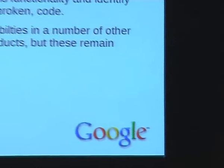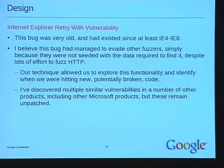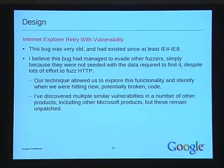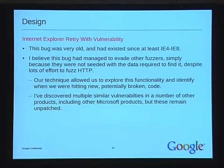This bug was really old — I believe it was present since IE4 or even IE3 — and it had managed to evade several other fuzzers that people had documented as fuzzing HTTP and IE. They'd never found this bug. I think this is pretty obviously because it was undocumented and people just hadn't been seeding their fuzzers with these strings. I didn't have to do this manually — I encountered it in the wild, noticed that the coverage score increased in IE, added it to my corpus of interesting HTTP responses, and it was trivial to exploit.